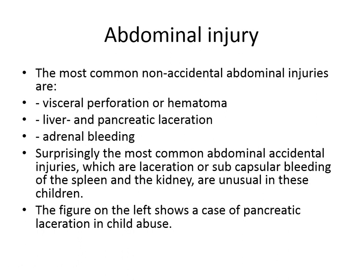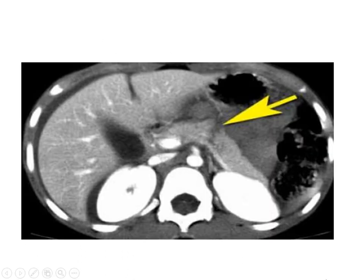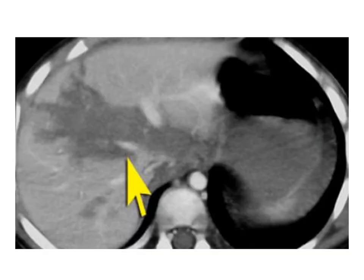For abdominal injury, the most common non-accidental abdominal injuries differ from accidental ones. In accidental injury, splenic and renal injuries are more common, but in non-accidental injury, liver and pancreatic lacerations are more common. Pancreatic injury is very uncommon in accidental injury, where the spleen is more commonly injured first. A case of liver laceration in a child with non-accidental injury can also be seen on CT.